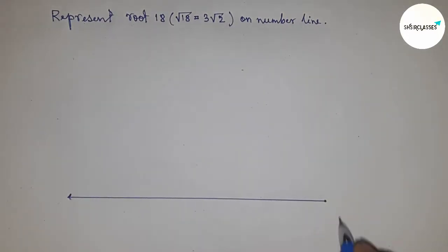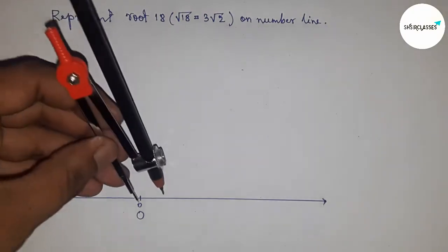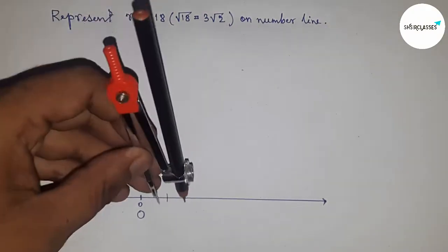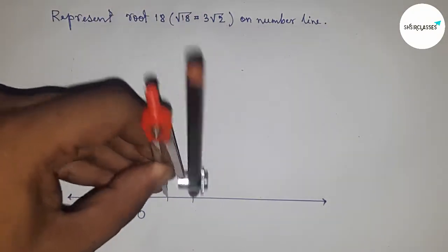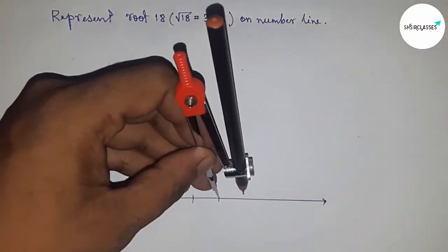Drawing a line of any length here and mark the ends to represent the number line. Next, taking the starting number zero and denote it as O. Next, taking any length by compass and mark the numbers on the line.